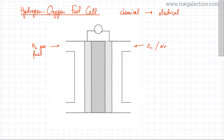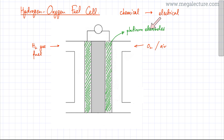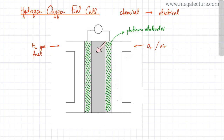The electrodes in this fuel cell are generally made from costly platinum. The reason why platinum electrodes are used is because platinum is a very good catalyst — it activates the whole process, speeds it up, and lowers the activation energy. So platinum acts both as an electrode for transferring electrons and as a catalyst to speed up the reaction.